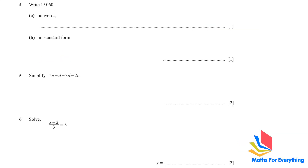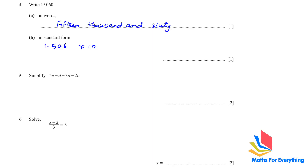Write 15,060 in standard form. In standard form you must have only one number before the decimal. For a whole number, the decimal is at the end. We move the decimal four places, so we write 1.506 × 10 to the power of 4.